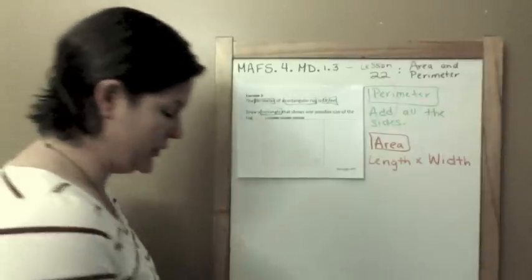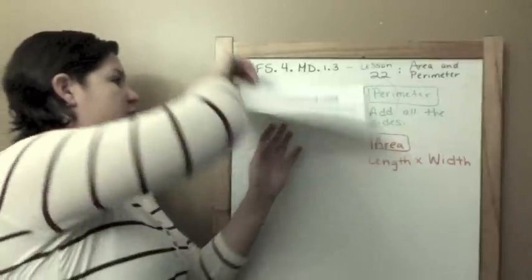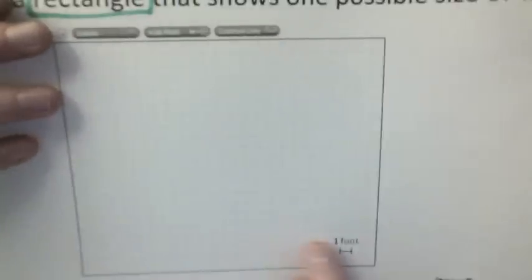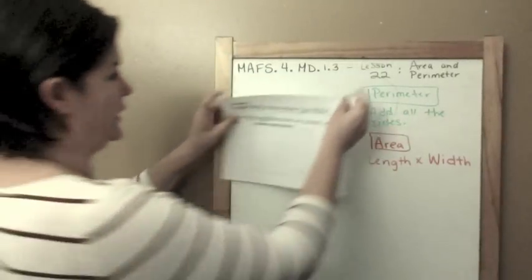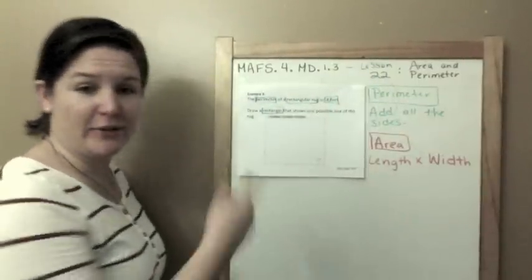So I need it to be 18 feet, and I need to draw it on here. Let me bring this a little bit closer so you can see that this is actually grid, it's actually grid. Do you see all the little grids, all the little boxes within that? All right, so each little line, each unit is one foot.